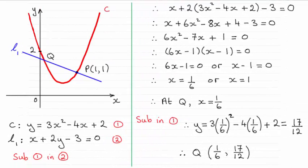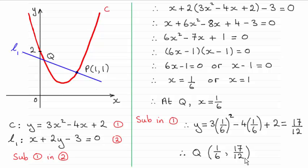Hi there. For this question, we had to find the coordinates of Q where L1 crossed the curve C. You can see that those coordinates for Q are x = 1/6 and y = 17/12.